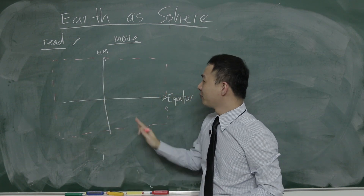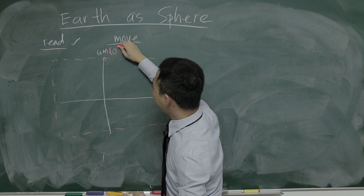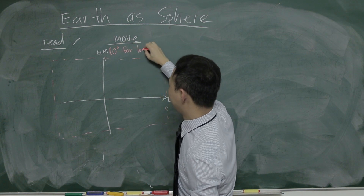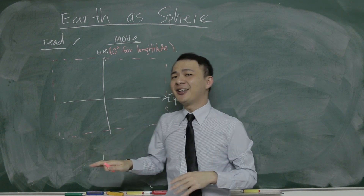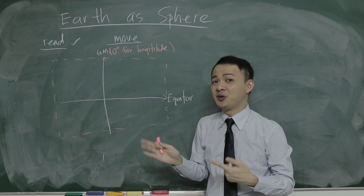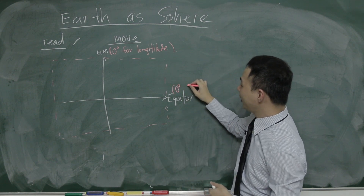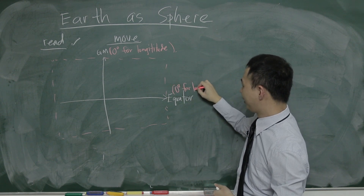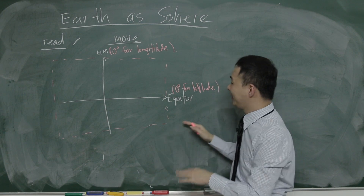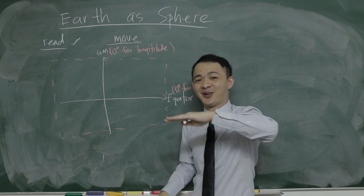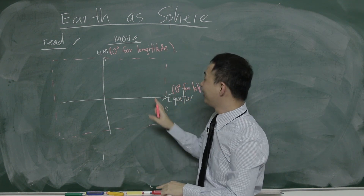I make this Y-axis the Greenwich Meridian and the X-axis the equator. If you fold the whole thing together, it becomes a ball — a sphere — our Earth. What is Greenwich Meridian? It's basically the zero degree for longitude. What is the equator? It's the zero degree for latitude, and it's always located at the middle of the Earth.